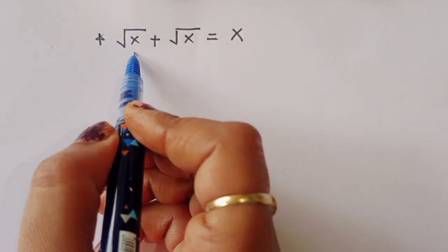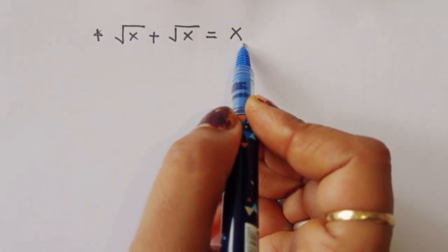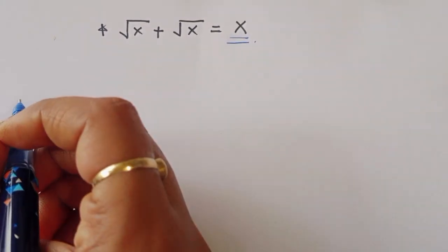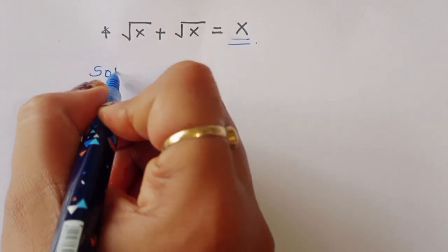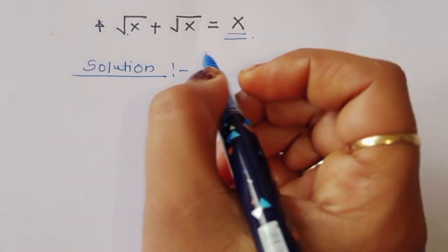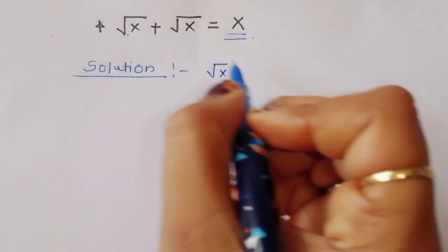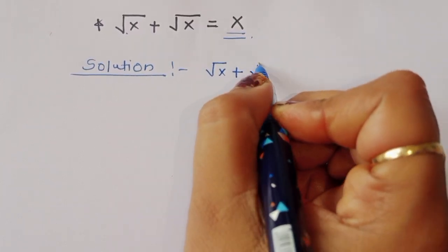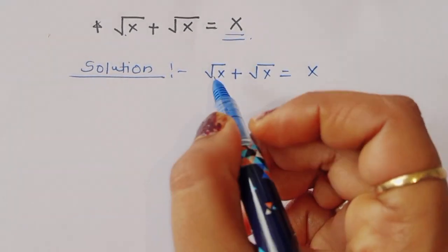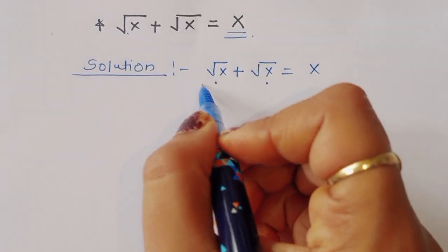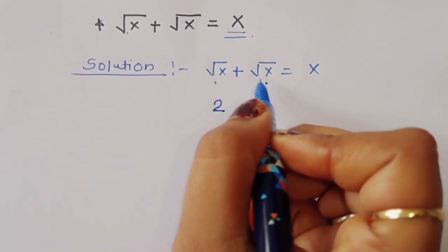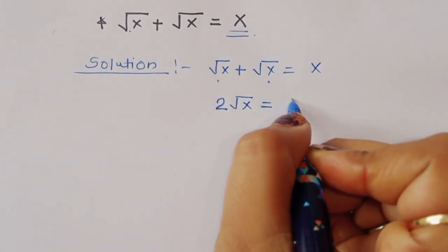The question is: given square root of x plus square root of x is equal to x, we have to find out the value of x. Let's see the solution. Square root of x plus square root of x — we can write this as 2 square root of x. So 2 square root of x is equal to x.